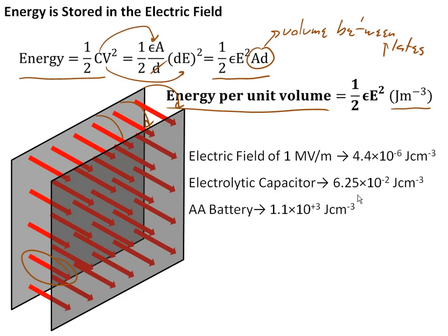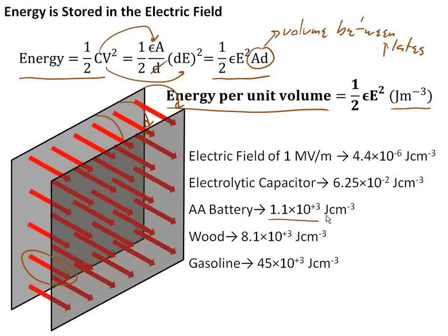Something like an AA battery that is basically storing the electrical energy in terms of a chemical reaction is much higher. Now we're about 1,100 joules per cubic centimeter, rather than millionths of joules per cubic centimeter. If we go on and look at other types of chemical reactions, like burning wood, we're up to 8,000 joules per cubic centimeter. Something like gasoline is 45,000 joules per cubic centimeter.